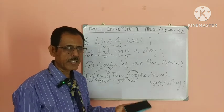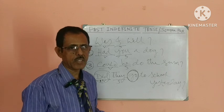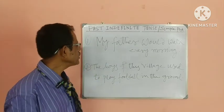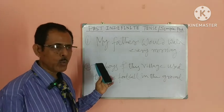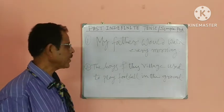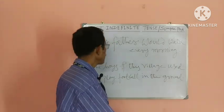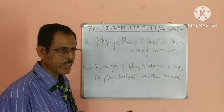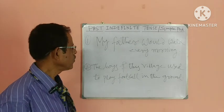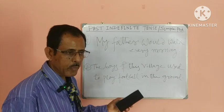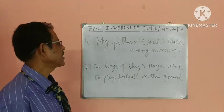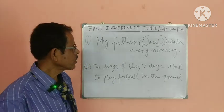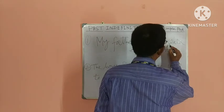Now I want to discuss another step that is called habitual past. Please see some examples. In the first sentence I have written: 'My father would walk every morning.' This means my father walked in past time — it was his habit. At present he is not walking, that's why it is called habitual past. When 'would' is used, the main verb becomes its present form.